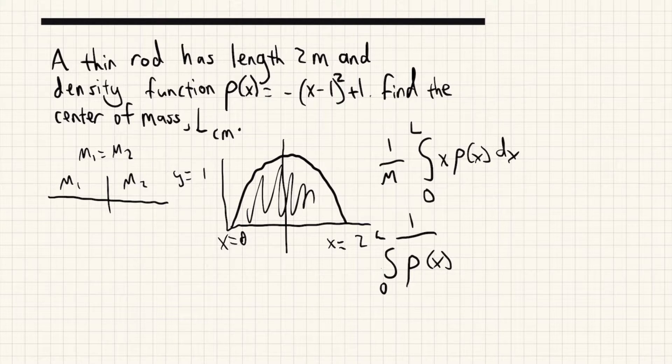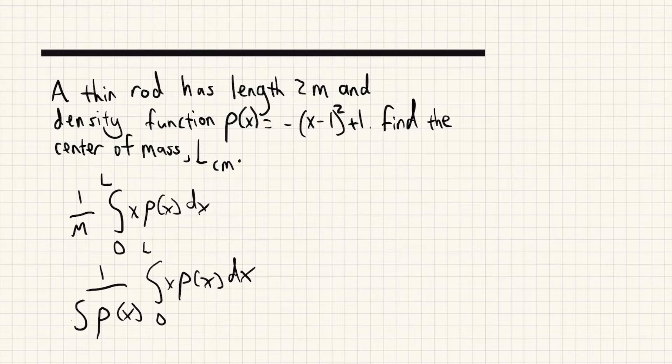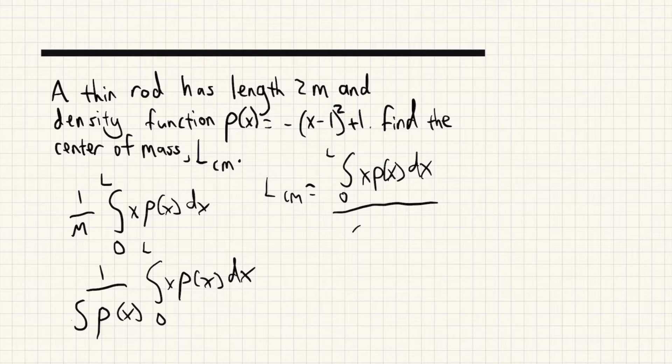And now we multiply this by integral from 0 to L of x times ρ(x) dx. So if we multiply this out, we end up with something that looks like this. Length of the center of mass is going to be equal to the integral from 0 to length of x times ρ(x) dx divided by the integral from 0 to length of ρ(x) dx.